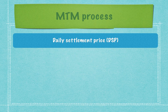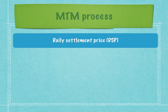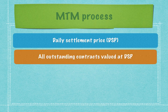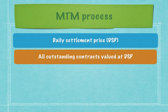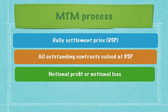Even though trading in India ends at 3:30 p.m., at 3:45 p.m. the exchange announces the daily settlement price of all futures and options. Investment banks then use these daily settlement prices to value the outstanding positions of their clients. All outstanding contracts are valued at this DSP — the daily settlement price — even if the trading position was taken in the morning of that day. The DSP is applied to find the notional profit or loss at the end of that day.